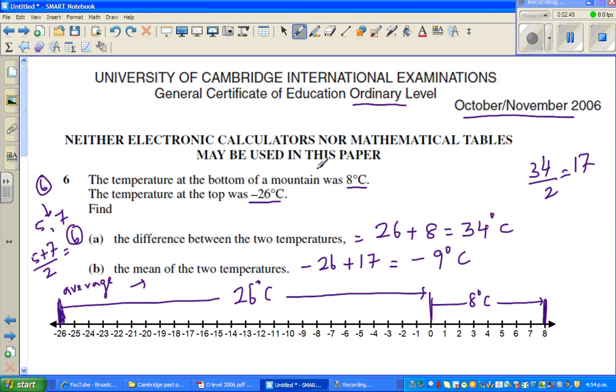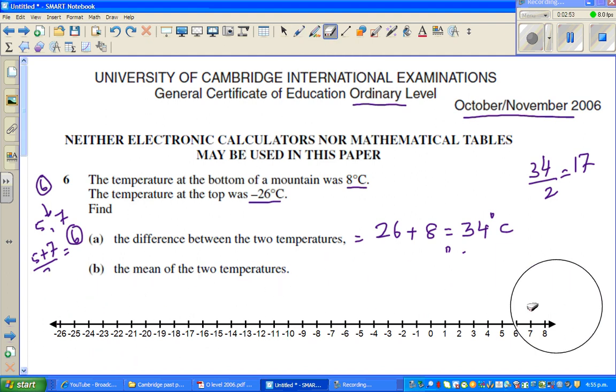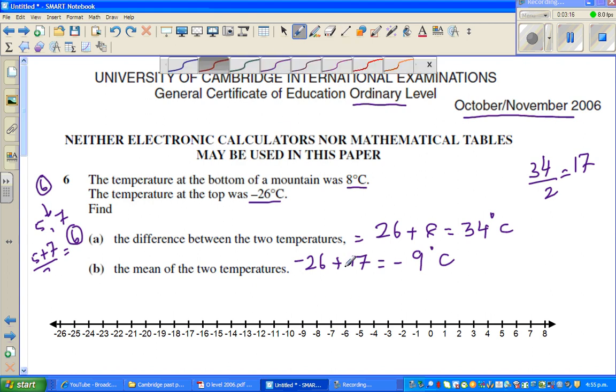The mean of the temperature is... so I will show that on this. Let me write the answer first. So this is minus 26 plus halfway, that is 17, which is minus 9 degrees centigrade. So the mean is minus 9, what I am saying is minus 9 comes halfway.